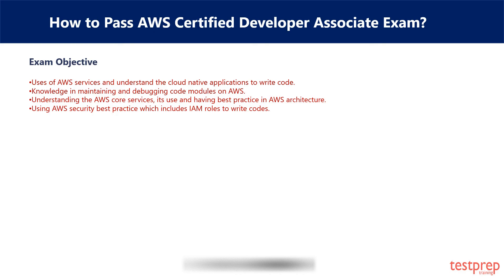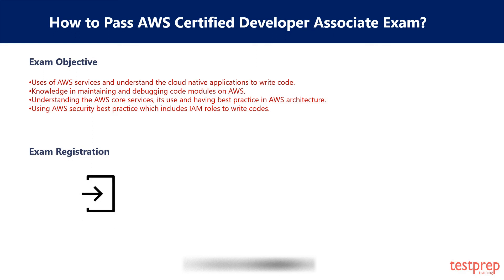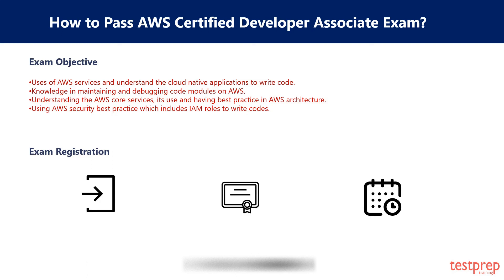Exam Registration Process. Steps to register for the AWS Developer Associate Exam. First, you need to sign in to AWS Training. Second, click on Certification at the top. Third, click on AWS Certification Account and schedule a new exam. Fourth, check for the exam you want to take and click the Schedule at Pearson VUE button or PSI.